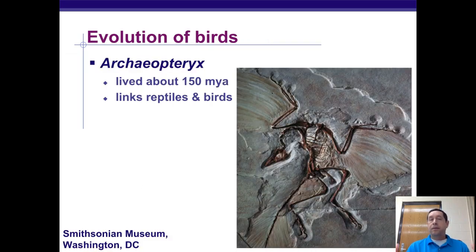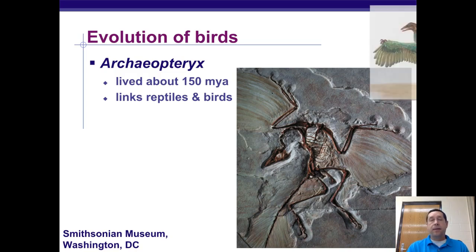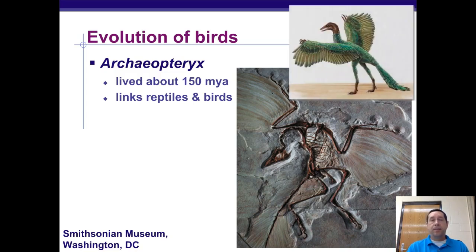One of the first transitional species discovered was Archaeopteryx, which lived about 150 million years ago. It shows a link between reptiles and birds. In its skeleton, it has structural similarities to both reptiles and birds, and it has evidence of feathers and so on.